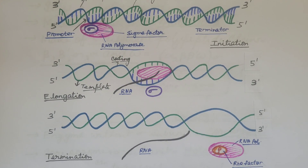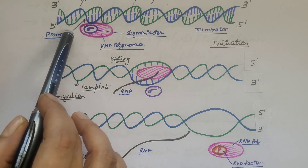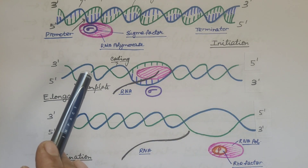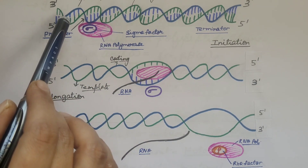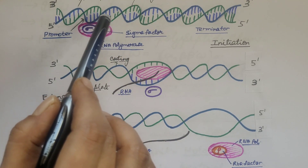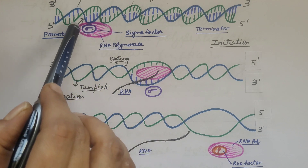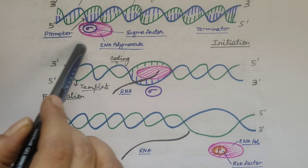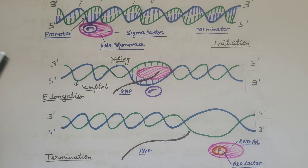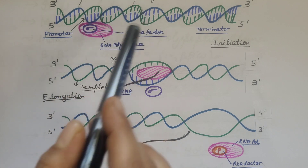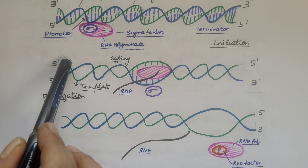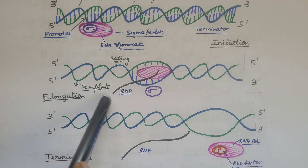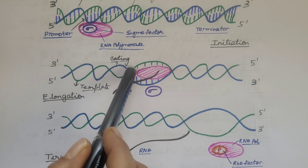Now let us understand the steps of prokaryotic transcription with the help of a diagram. This is the DNA double helix, with the promoter region on one end and the terminator region on the other. In initiation, RNA polymerase attaches to the DNA molecule and moves along the DNA strand until it recognizes the promoter region — the transcription start site. The double helix unwinds and its bases get exposed. The strand with 3' to 5' polarity serves as the template strand, and the other strand is the coding strand.